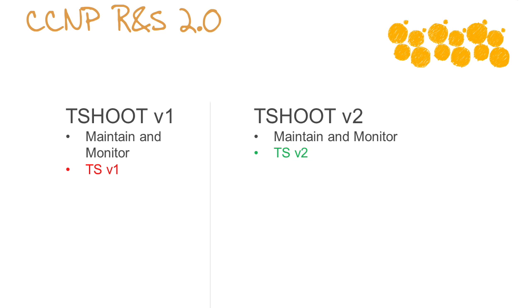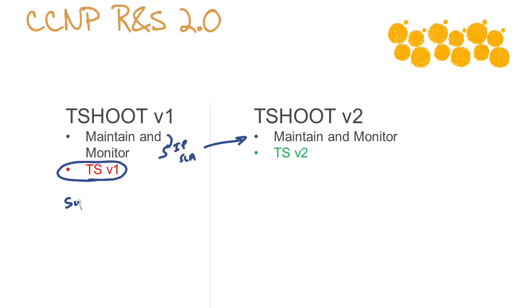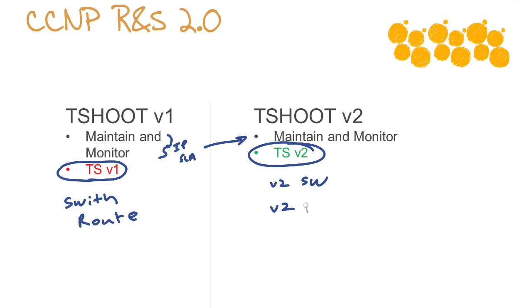And of course, the CCNP Routing and Switching 2.0 rounds out with the T-Shoot class, which is short for troubleshooting. In version 1, we had maintaining and monitoring things — IPSLA would be a great example of a technology tested there — and that translates directly into version 2. The T-Shoot version 1 tested your ability to troubleshoot all of the version 1 topics from Switch and Route. Well, the same happens here: it's going to be the version 2 Switch and version 2 Route topics that you are responsible for troubleshooting, demonstrating your ability across all those topic domains.